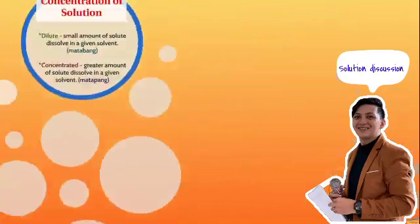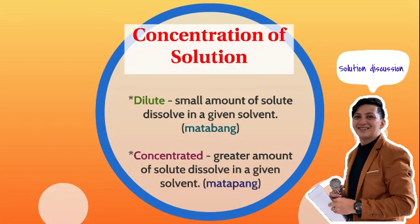Next, we have concentration of solution. In concentration of solution, we have two types: dilute and concentrated. In a dilute solution, a small amount of solute dissolves in a given solvent — in Tagalog, when we make our coffee or powdered drink, you can say that it's matabang, like walang lasa. And concentrated means a greater amount of solute dissolved in a given solvent — in Tagalog, matapang. So when you make your own coffee or powder juice drink and you pour a large amount of solute with little water, that will be concentrated — you can say, antapang!